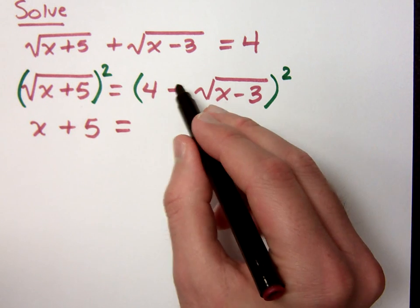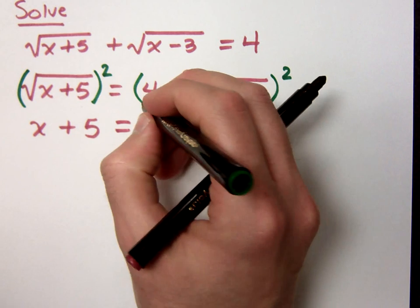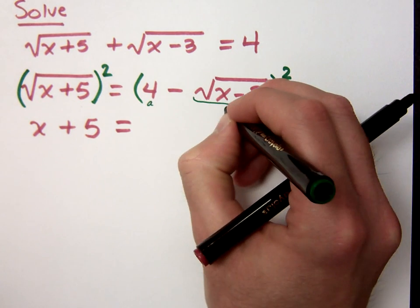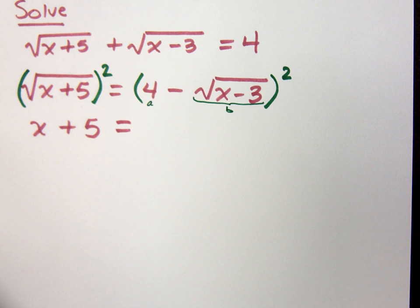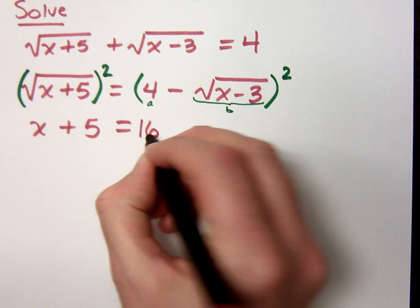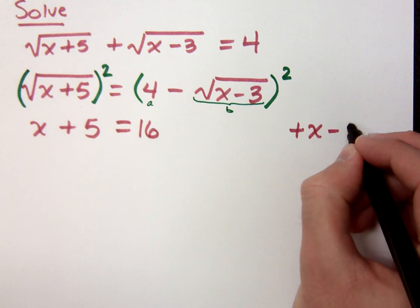Now over here, remember you have to know your special product. And you have to be able to see that the 4 is your a, and this whole guy right here is your b. So when I'm doing the special product, I get a squared, which is 16. I get b squared, and that guy goes here at the end, and that's plus x minus 3.